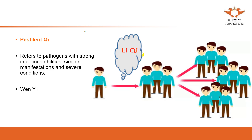The theory of Pestilence Qi was developed in the Qing dynasty, which was about 300 years ago. The Qing dynasty ran from 1616 to 1912. So roughly more than 300 years ago, this theory was developed from there.